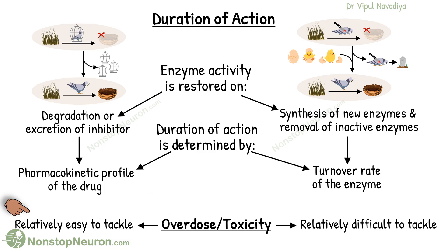The other implication is with overdose and toxicity. Overdose of reversible inhibitors is easy to tackle because it's easy to restore the enzyme activity. Whereas overdose or toxicity of irreversible inhibitors is relatively more difficult to tackle — large doses inhibit lots of enzymes, and their activity is restored only on the synthesis of new enzymes, which usually takes a long time. So the condition can get more serious with irreversible inhibitors, for example organophosphate poisoning.